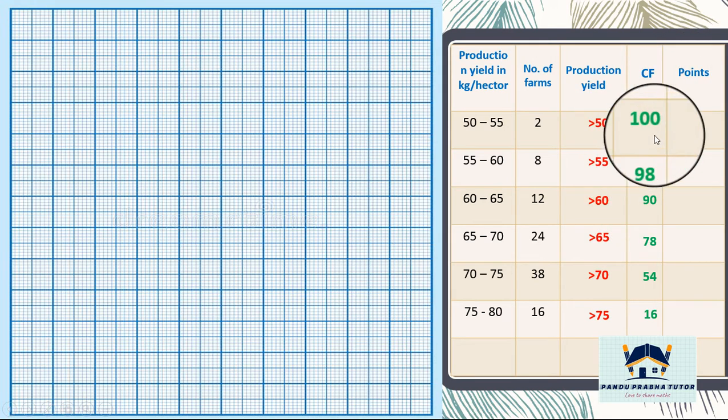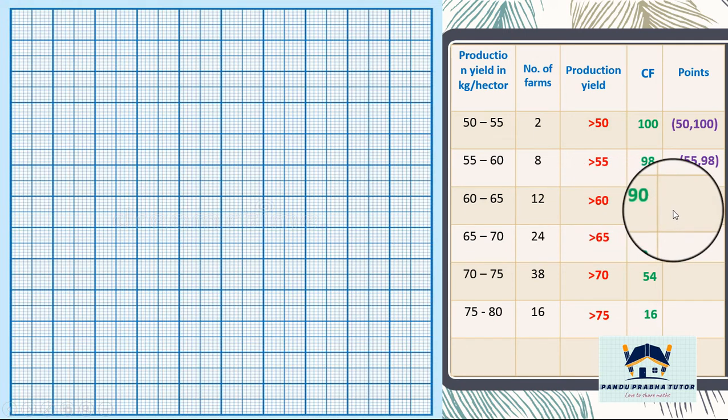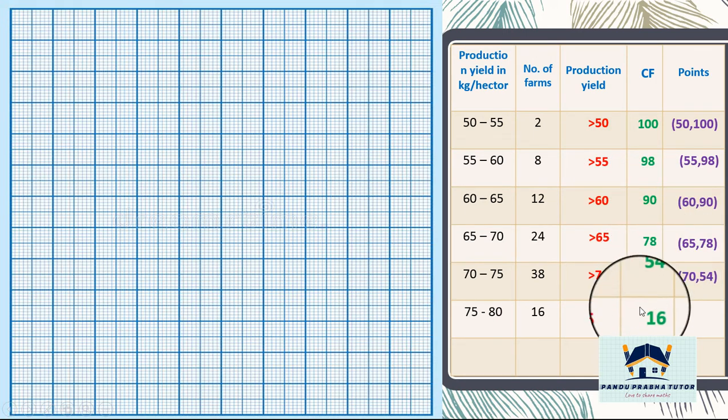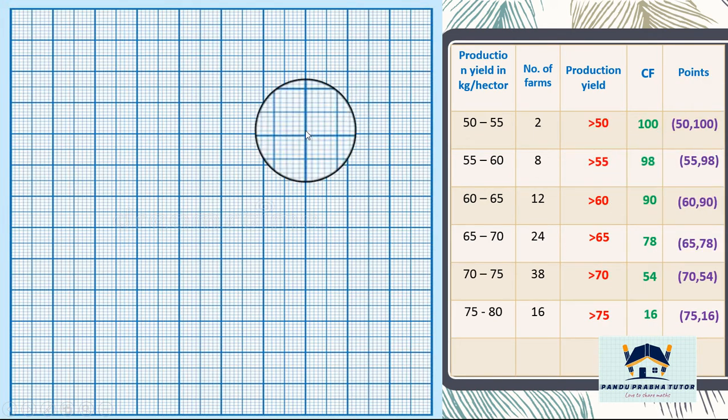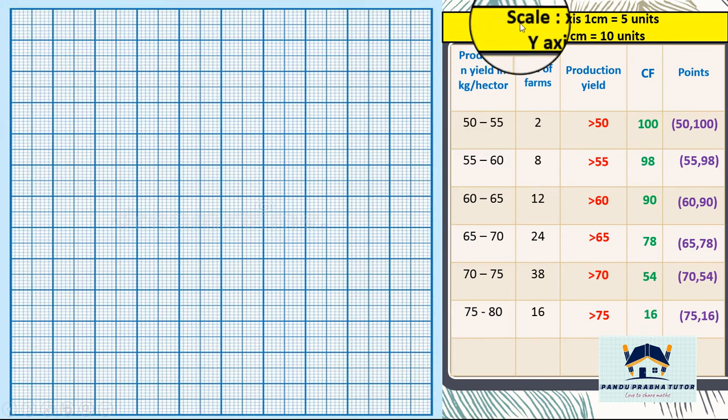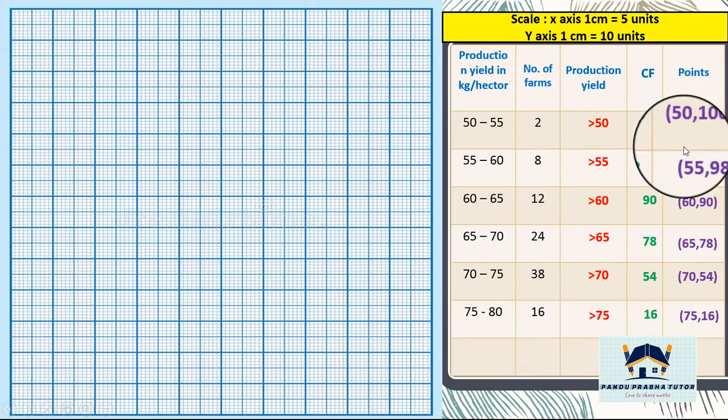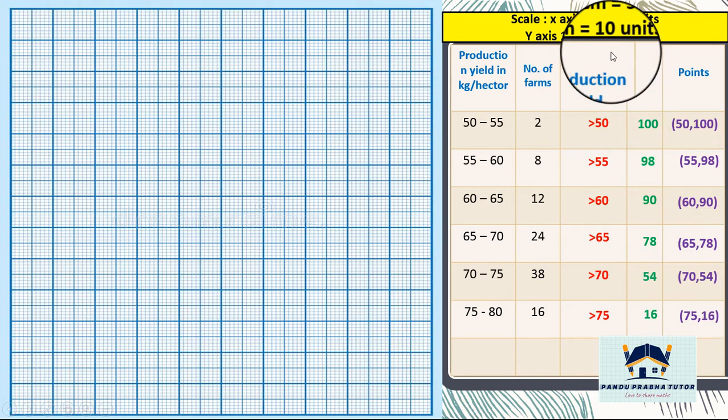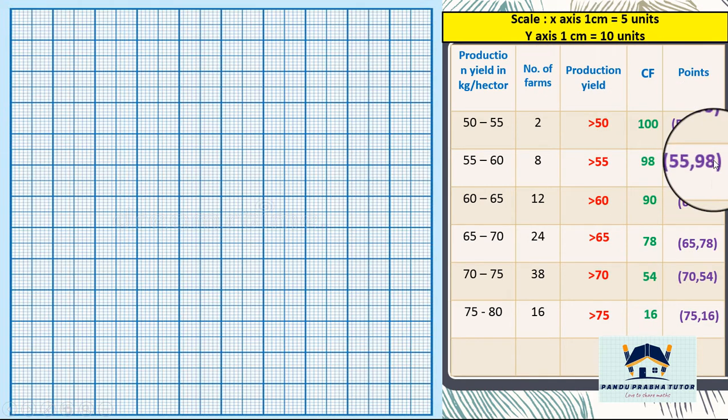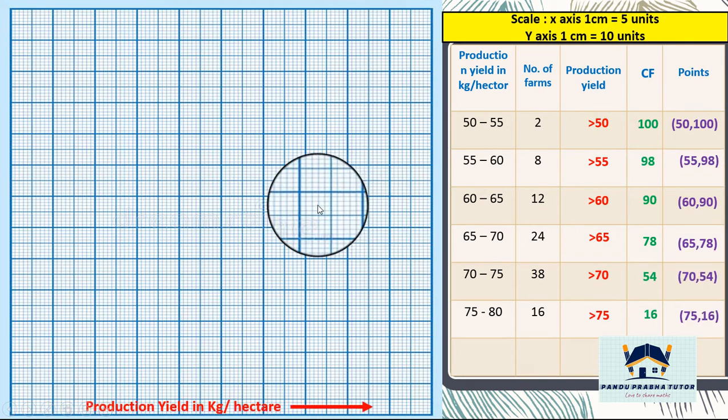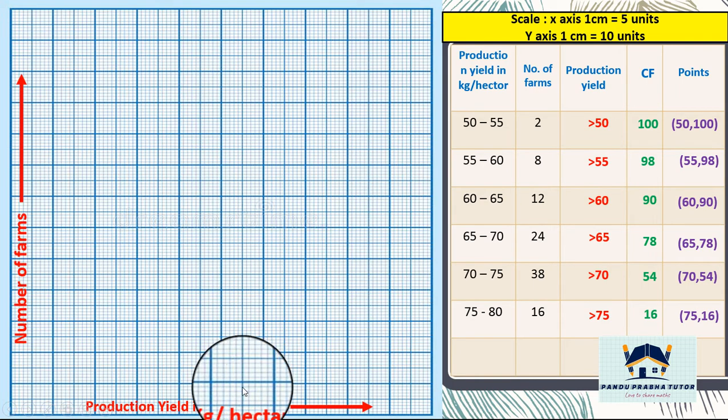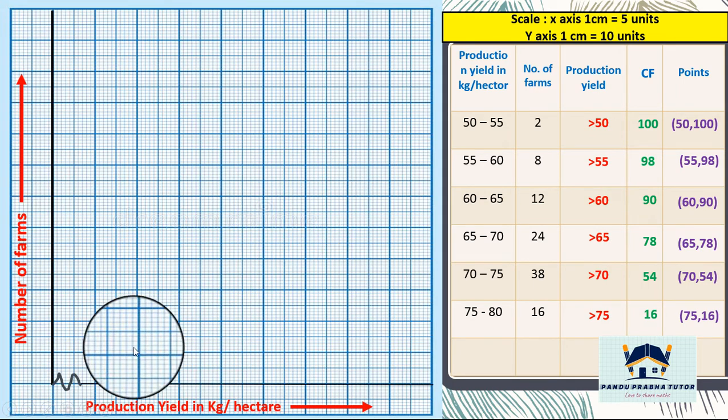First point is 50 comma 100. 55 comma 98. 60 comma 90. 65 comma 78. 70 comma 54. 75 comma 16. Scale is based on the x and y coordinates of the point. In the x-axis we have to mark production yield in kg. In y-axis number of farms.